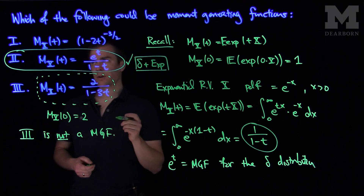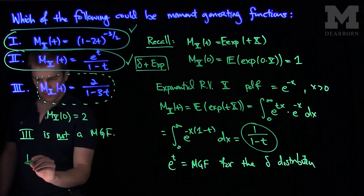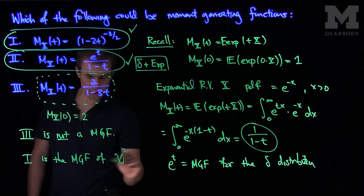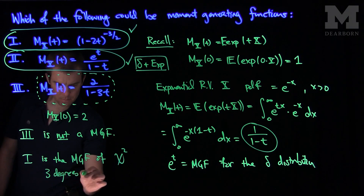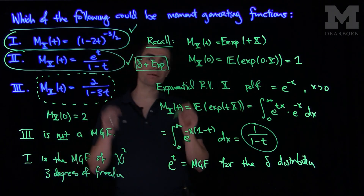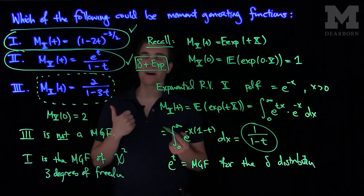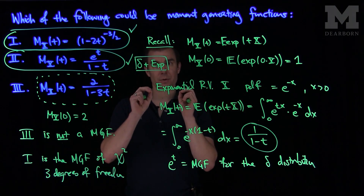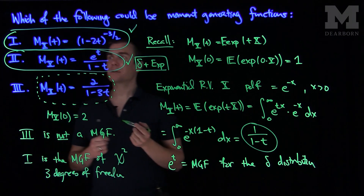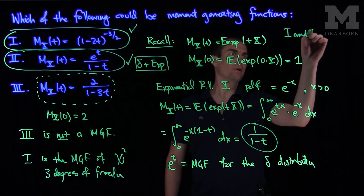If we look at function 1, it turns out it is also indeed a moment generating function. It is the MGF of a chi-squared distribution with 3 degrees of freedom. A chi-squared with 3 degrees of freedom is the sum of three independent squared normal random variables, and (1 − 2t)^(−3/2) is what you get by multiplying the MGFs of three independent chi-squared distributions each with 1 degree of freedom. So functions 1 and 2 are valid MGFs — that is your solution.